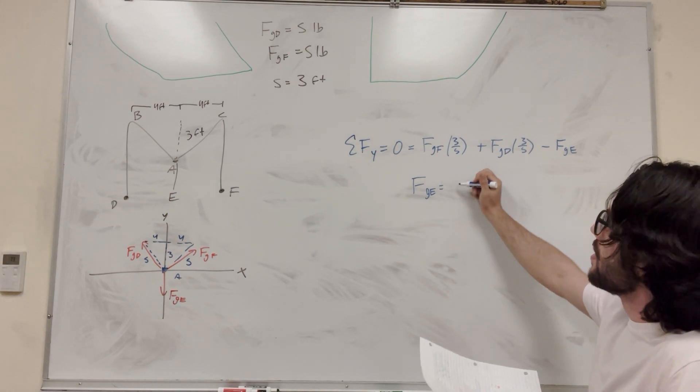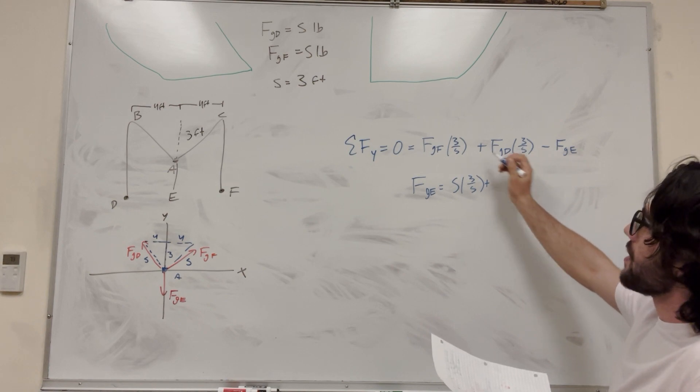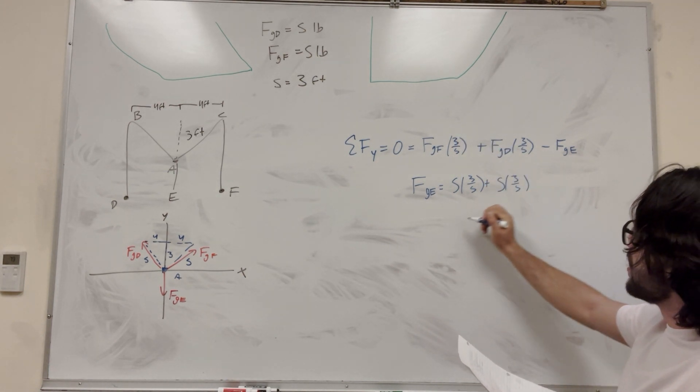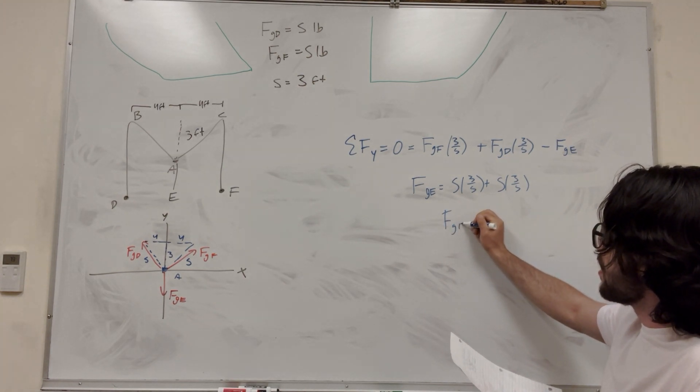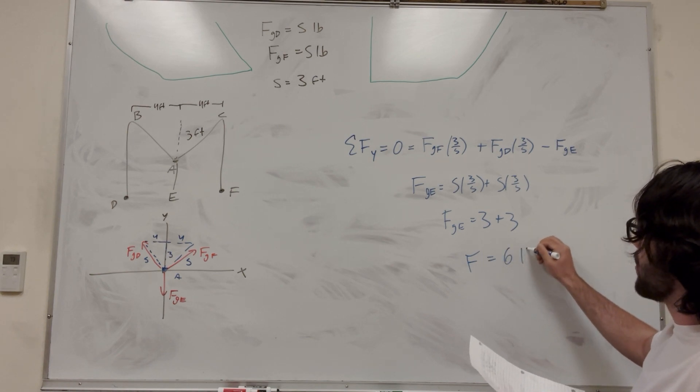5, times 3 over 5, plus the next one, force gravity D, 5, times 3 over 5. You're just going to get force gravity E is equal to 3 plus 3. And then we're going to get that force is equal to 6 pounds. So that's how much it weighs, 6 pounds.